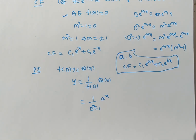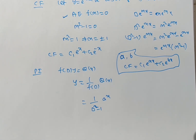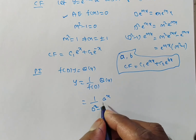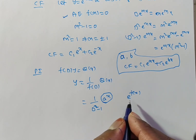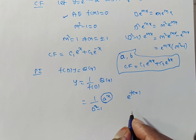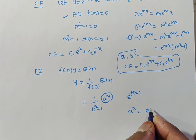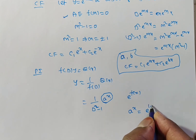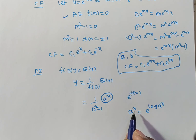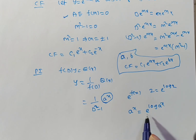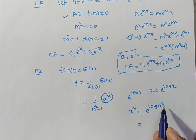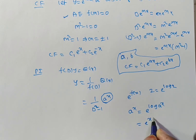We need to solve 1/(D² - 1) · aˣ. Is there any shortcut? Yes. We can convert aˣ into an exponential form. We can write aˣ as e^(log(aˣ)), which is e^(x·log a). For example, 2 can be written as e^(log 2). Similarly, aˣ = e^(x·log a). This is now in the form e^(ax) where the constant a is log a.